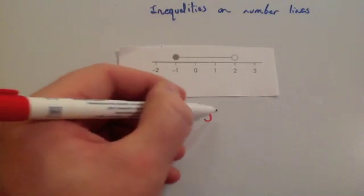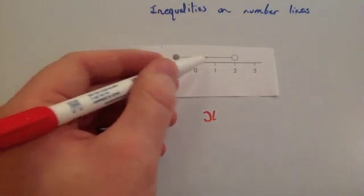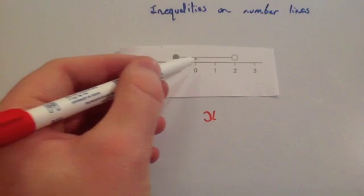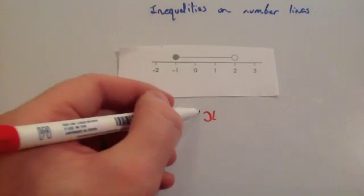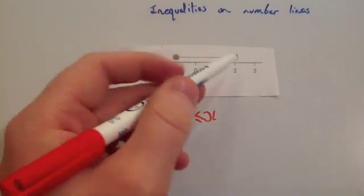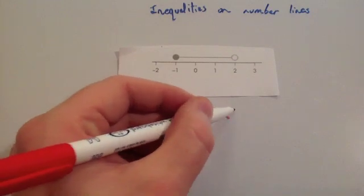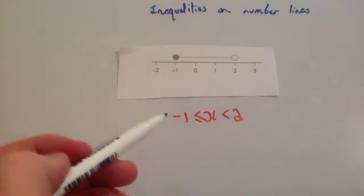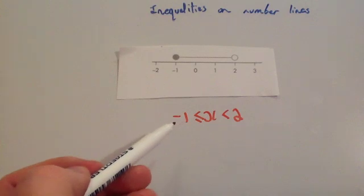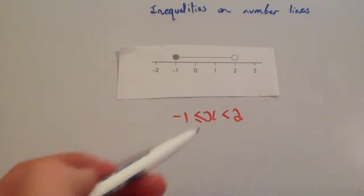You'd write that as x. Because it's bigger than or equal to minus 1, you've got minus 1 is less than or equal to x. But it's going to be less than 2. So this inequality reads: x is bigger than or equal to minus 1, but x is less than 2.